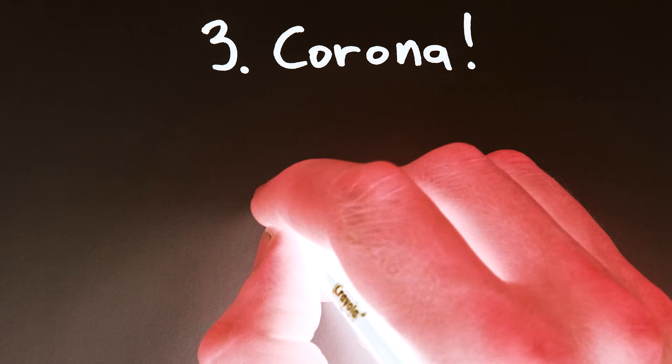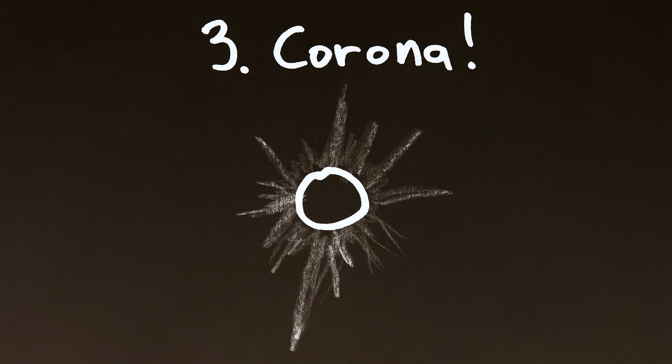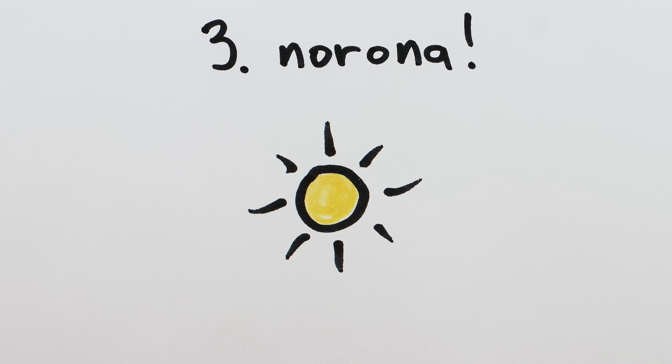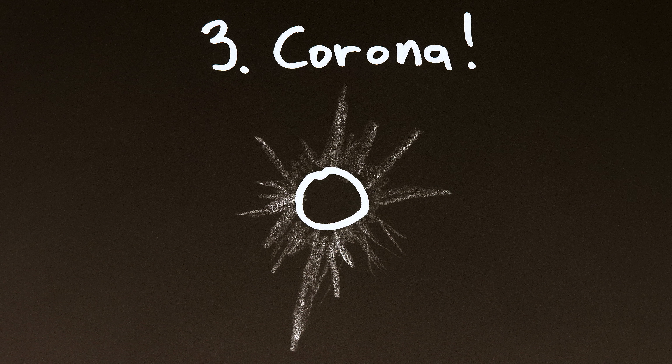Third, our current eclipses also reveal the sun's corona, the outer part of the sun's atmosphere that's much dimmer than the sun's bright disk and normally lost in the sun's glare. But when the sun's disk is covered during an eclipse, the corona appears like a bright starburst around the dark disk of the moon.